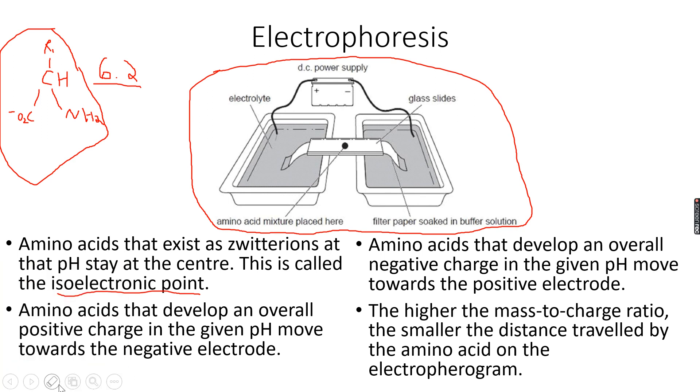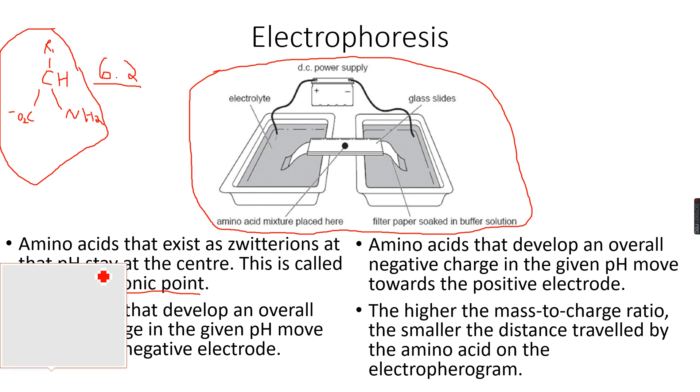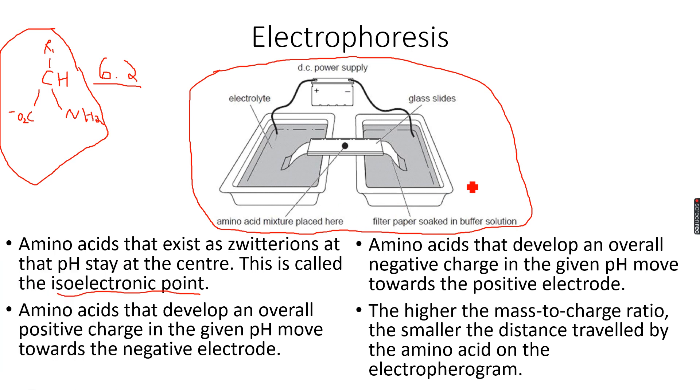This is the case when the pH of the buffer is greater than the isoelectric point. However, if we have a buffer with a pH of 4 — so this time the buffer has a pH of...